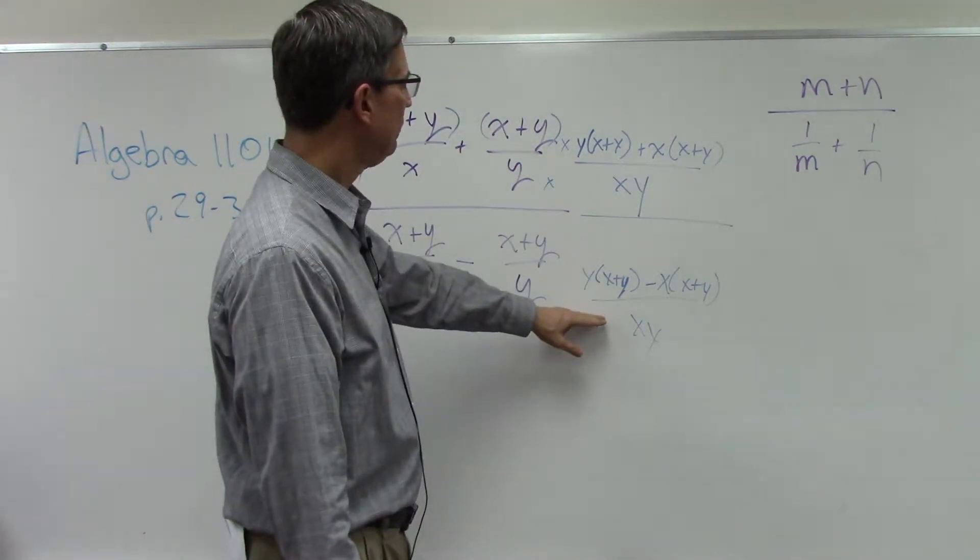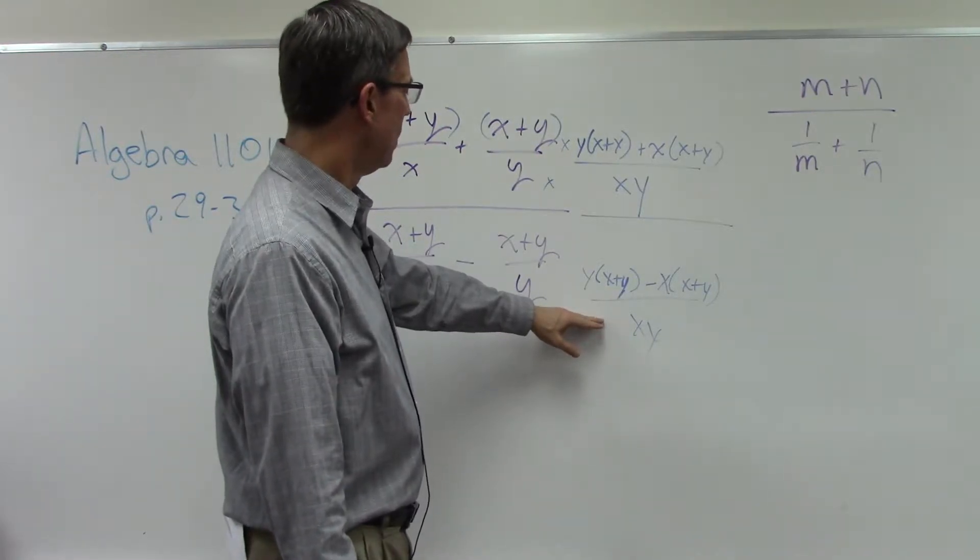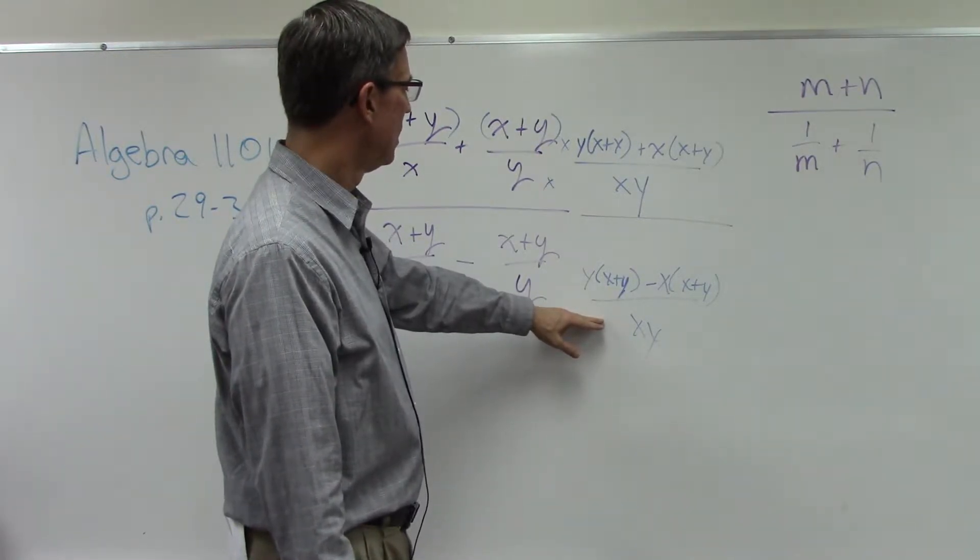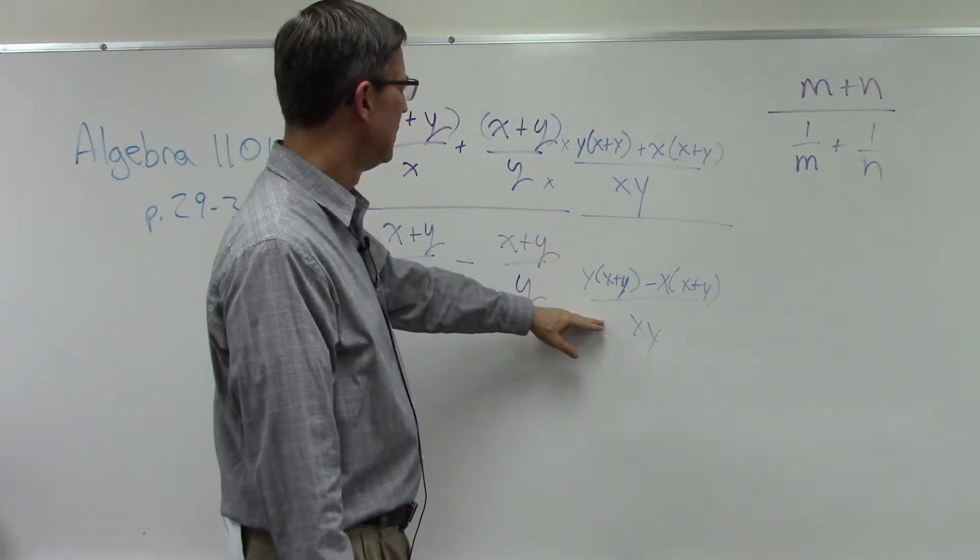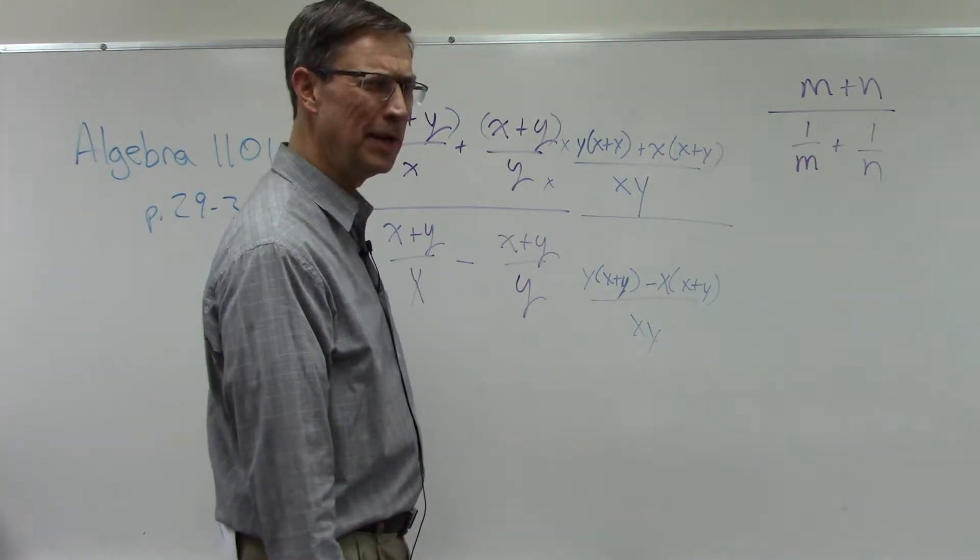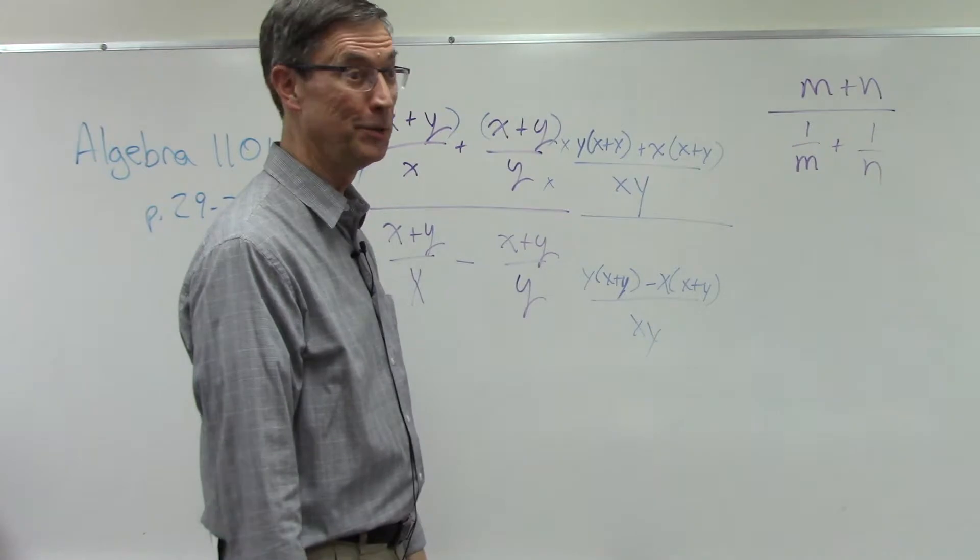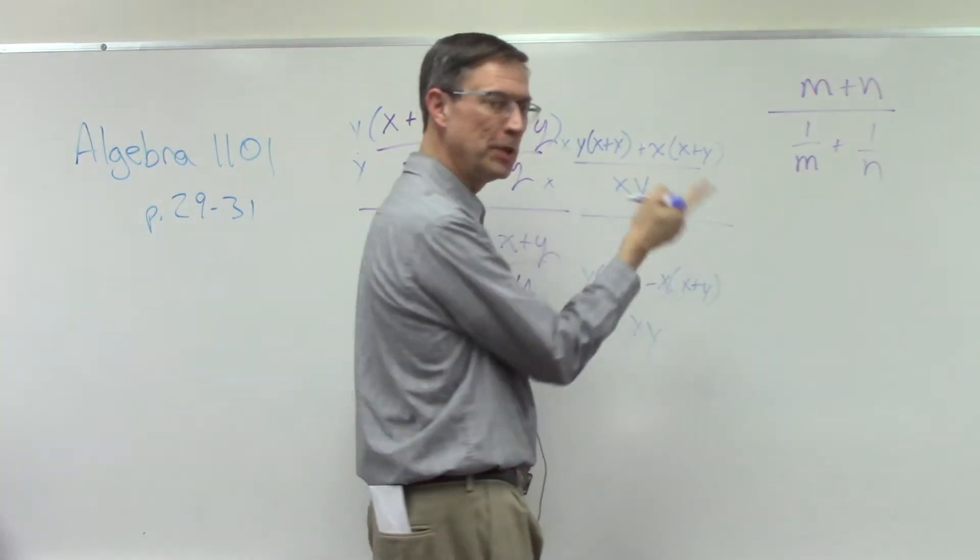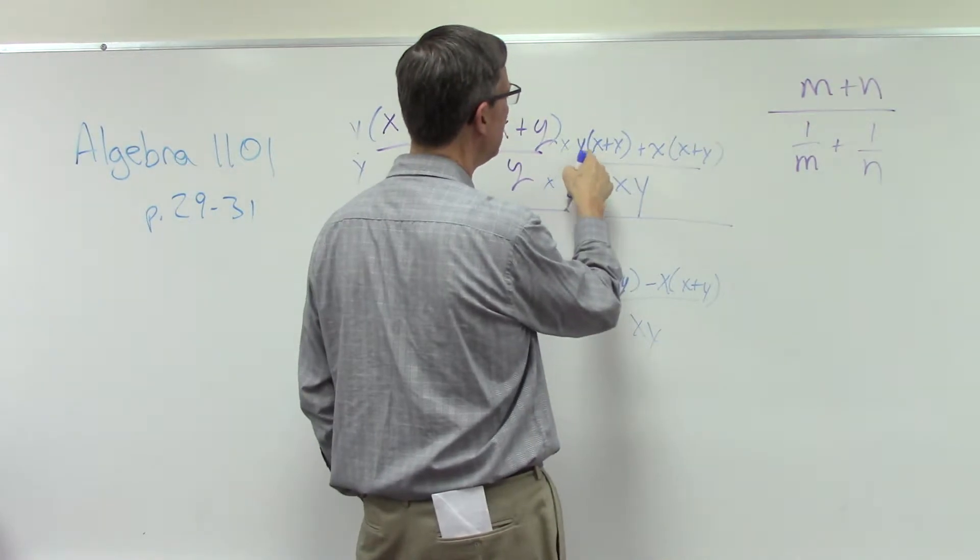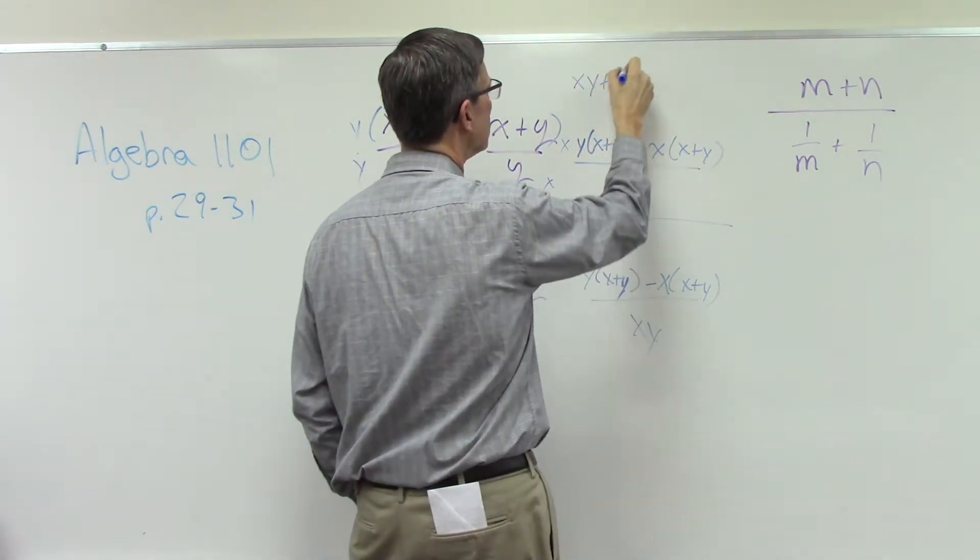Now, I'm looking at this and thinking, would they do that? They might do that. I don't have the score key for this to see what they actually do in the score key. There's a couple things we could do at this point. We could multiply this out and get xy plus y squared,